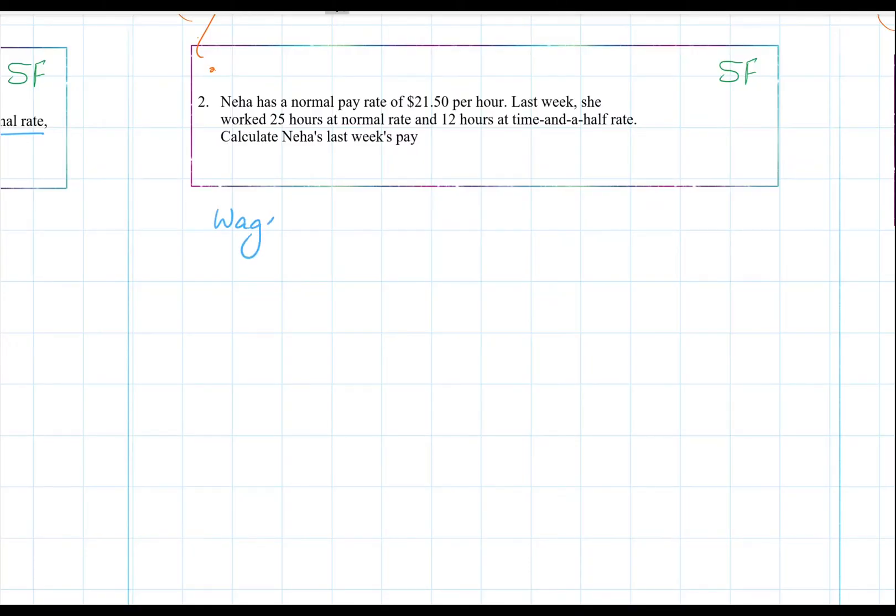So again, we know that wage is number of hours worked times your hourly pay. So Neha works 25 hours at $21.50 rate. And she also works 12 hours at time and a half. So that's going to be time and a half, 1.5 times the regular pay, which is $21.50. So that is $537.50 plus...